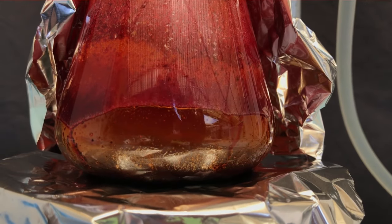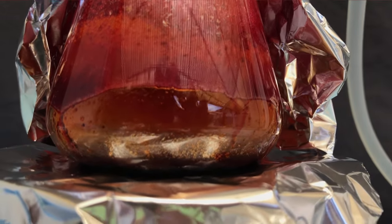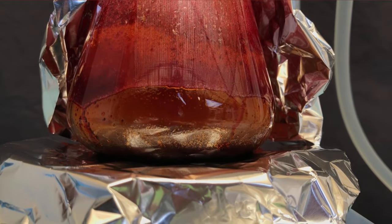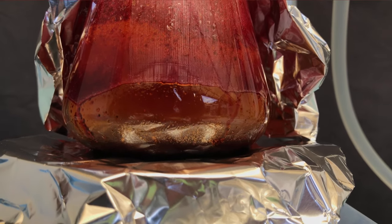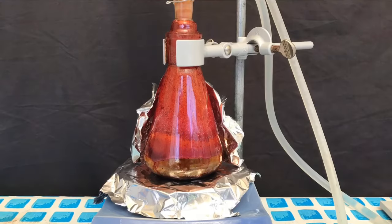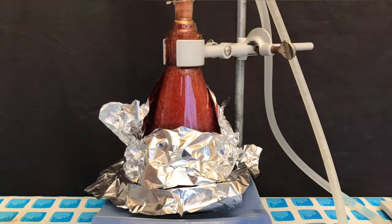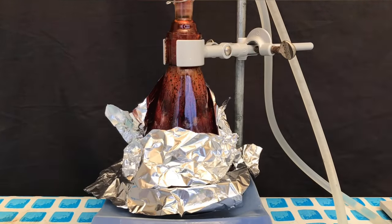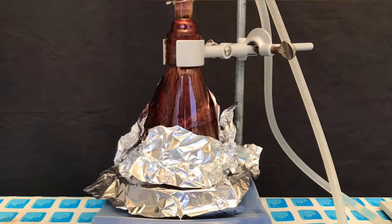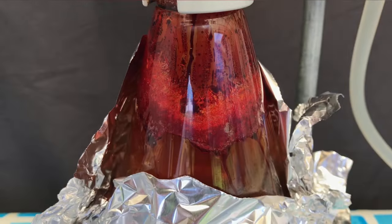Phosphorus tribromide apparently has a boiling point of around 170 degrees Celsius, but I had to crank the hot plate up to the maximum heat in order to make the vapor front climb. I don't know what's wrong with this devilish chemical.